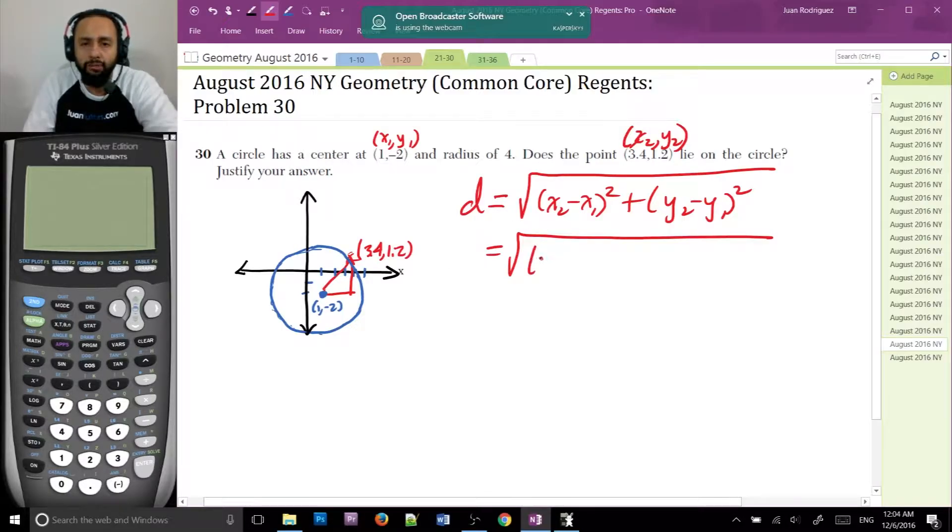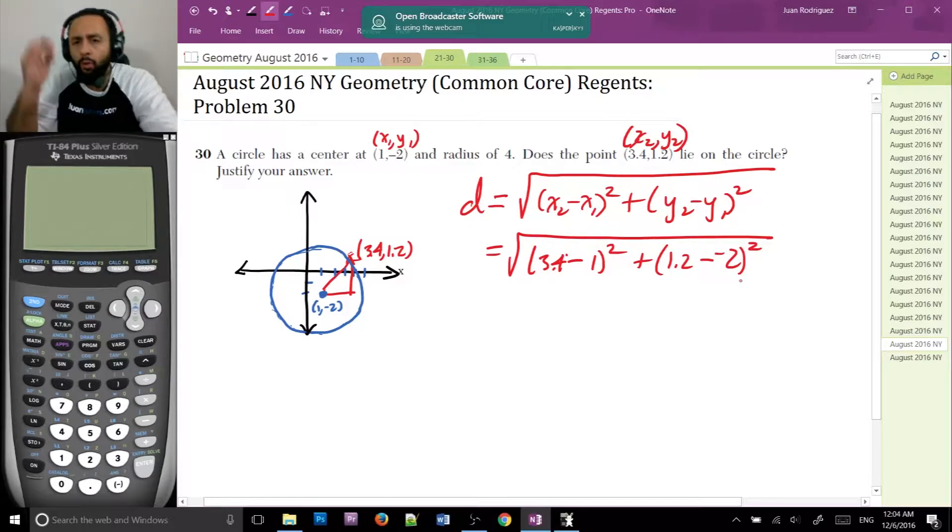x2 is 3.4 minus x1 is 1 squared plus y2 is 1.2 minus y1 is -2. Yes, you do need both negative signs. And they will always, 100% of the time, give you a point with one positive coordinate and one negative coordinate. They love doing that. In fact, it's predictable at this point. They do it every time.